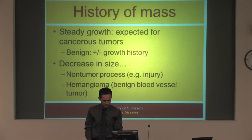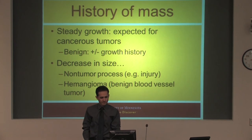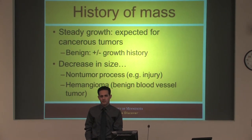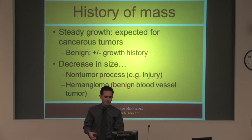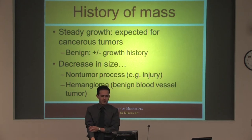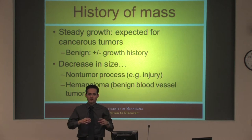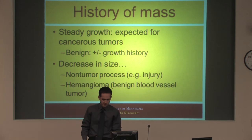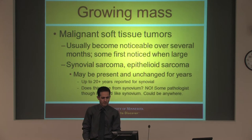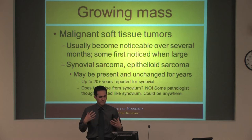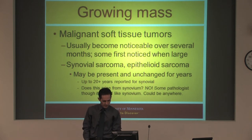You expect a growth history. Benign tumors may or may not show that. If something's decreasing in size, that's generally pretty reassuring — it's a hematoma that's resolving. Hemangiomas, these benign blood vessel tumors, can fluctuate in size depending on how active the patient is or whether the mass is above or below the heart. Things that fluctuate or decrease — that's a good thing. The cancerous soft tissue tumors usually become noticeable over several months, sometimes when they're large.